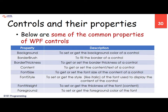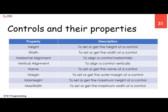Controls and their properties include: background, border brush, border thickness, content, font size, font style — we can change the font of text that appears in controls, panels, text boxes, or buttons — as well as their size, color, weight, making them italic, bold, or underlined. We also have: height, width, horizontal alignment, vertical alignment, name, margin, maximum height, and maximum width.